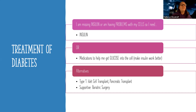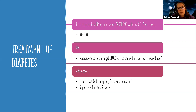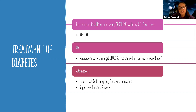Once you have diabetes, it's really about trying to manage and prevent things from getting worse. There are some alternatives: for type one, they can have an islet cell transplant or a pancreatic transplant. For type two — which is more associated with obesity — they can have bariatric surgery to help manage complications, obesity, and blood sugars better.